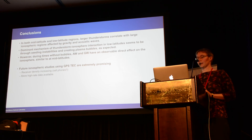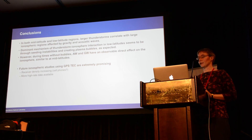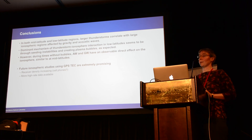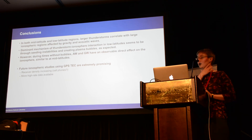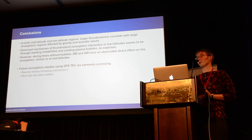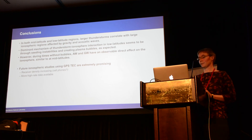In summary, we found that larger thunderstorms correlate with larger perturbed ionospheric regions. The dominant mechanism of thunderstorm-ionosphere interaction at low latitudes seems to be through the seeding of instabilities and creating plasma bubbles. We are also able to see direct acoustic wave and gravity wave responses on the ionosphere in both mid-latitude and low-latitude regions. The future of ionospheric studies using GPS TEC measurements is extremely promising with increasing receiver density and possibly more high-rate data available.